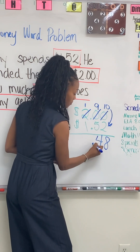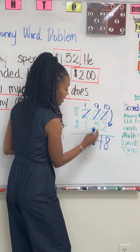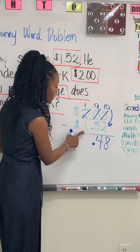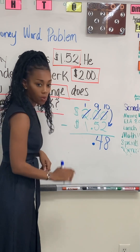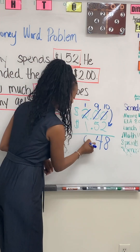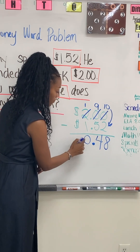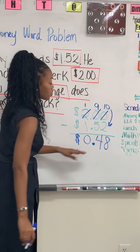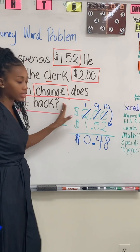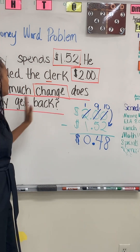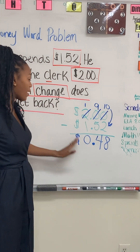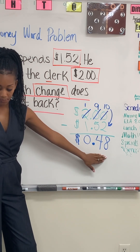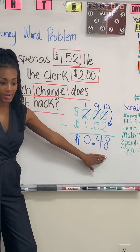I put my decimal right back in place and make sure I line it up. Now we have one minus one — zero. And then I put the dollar sign right here. So my answer to the question of how much change does Remy get back is forty-eight cents.